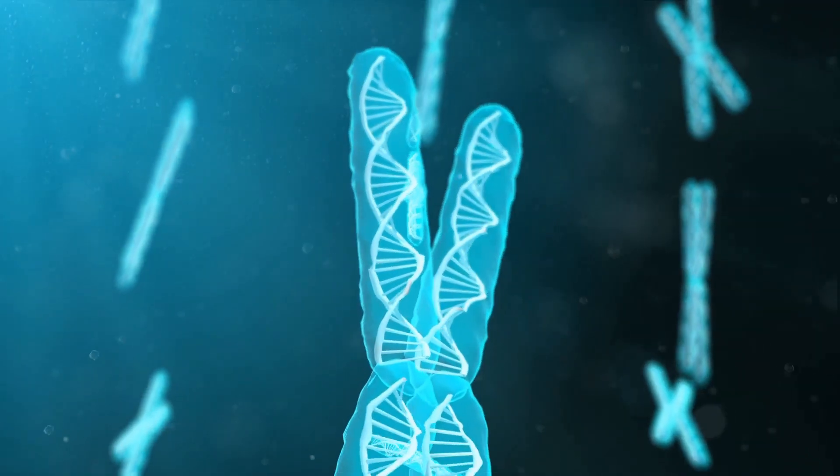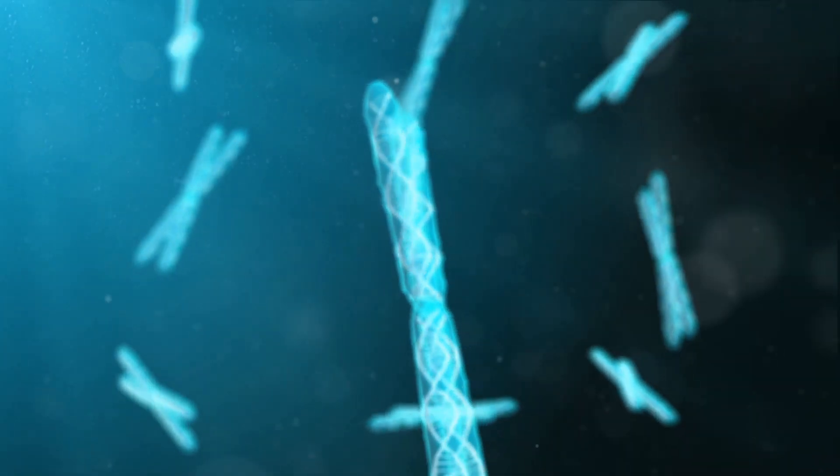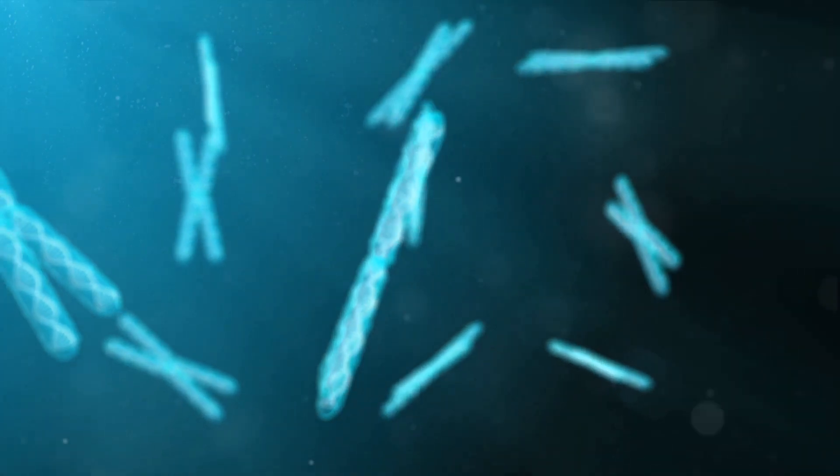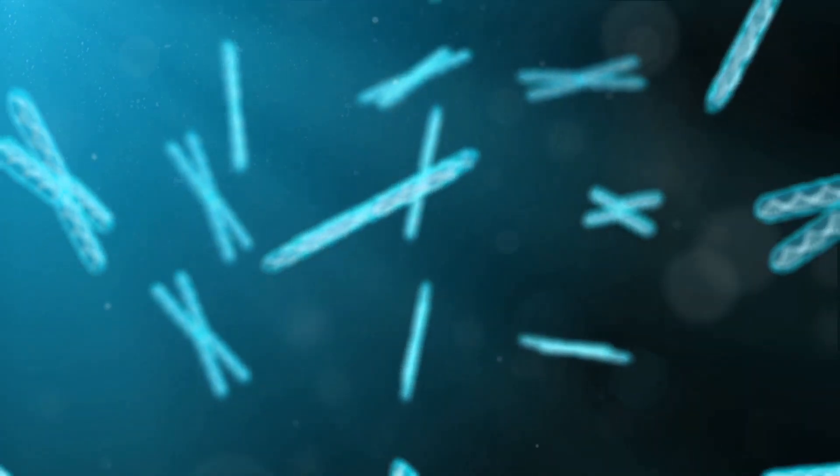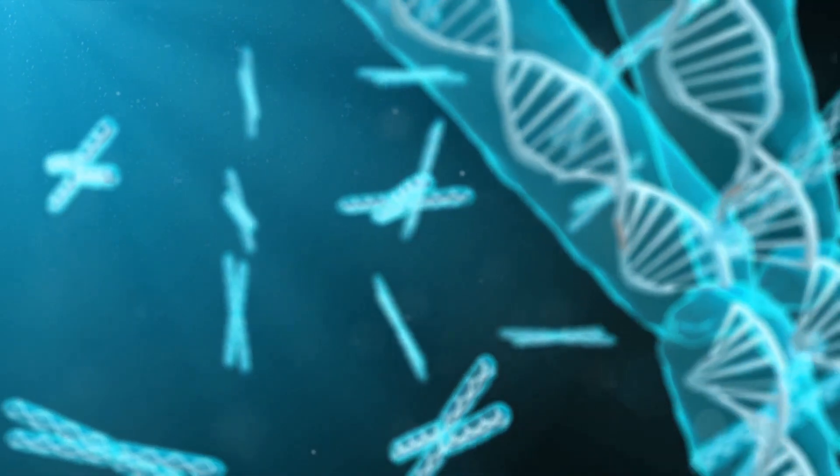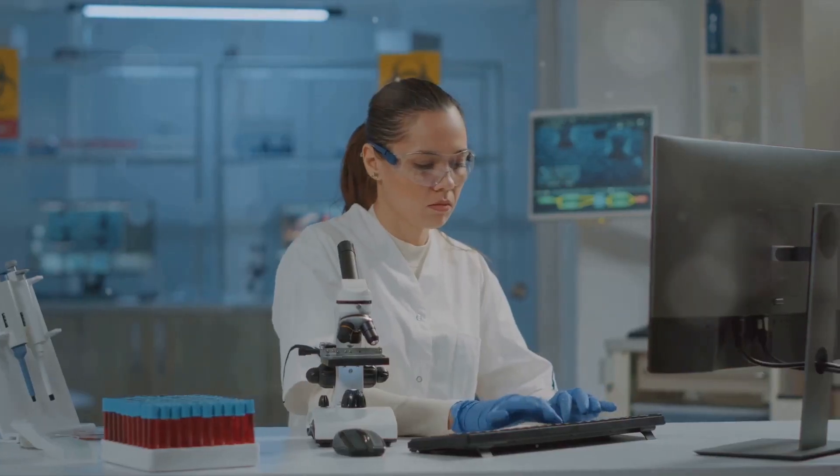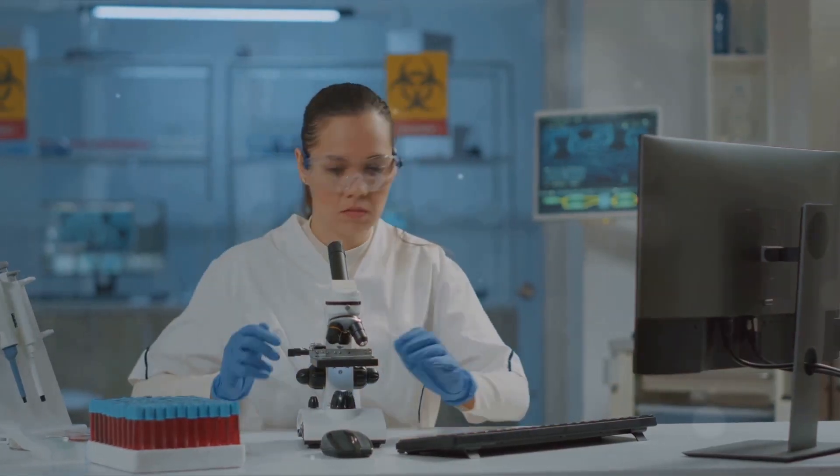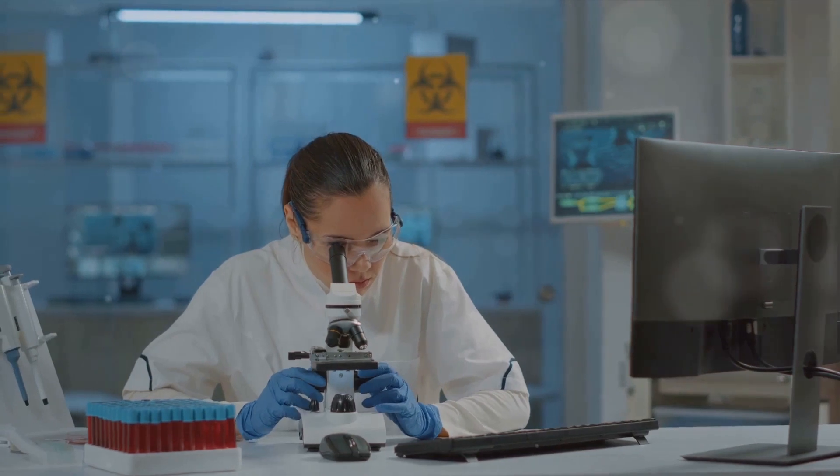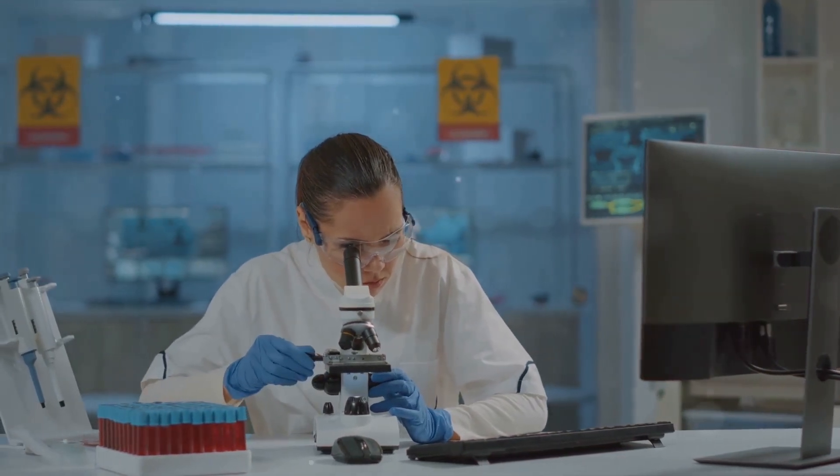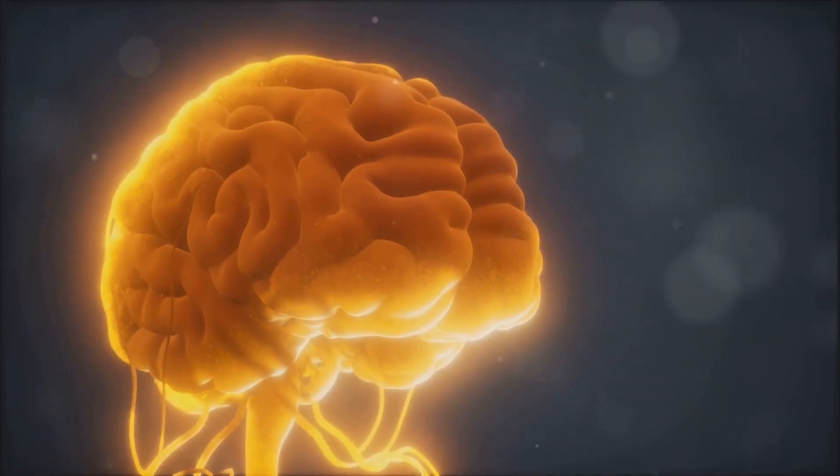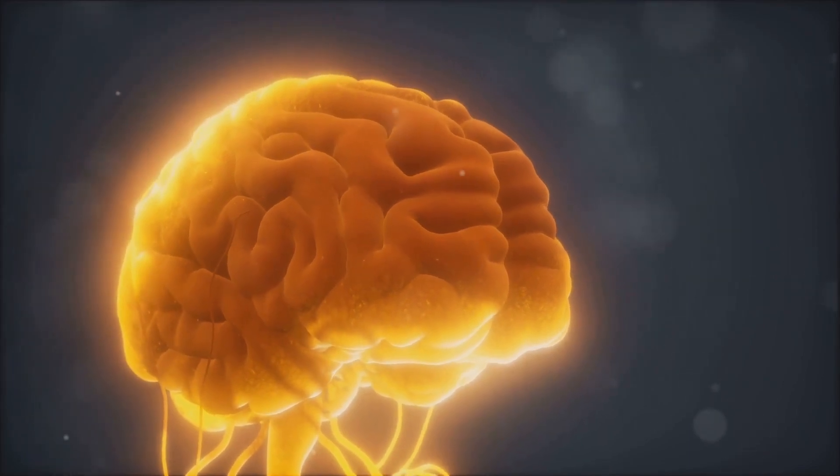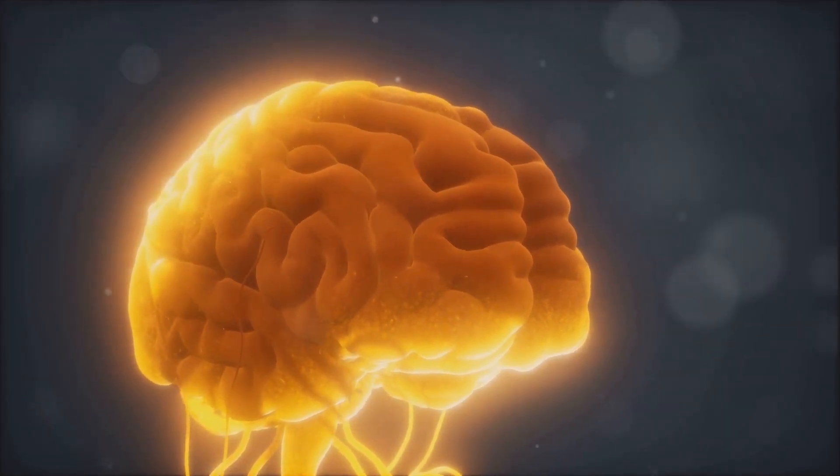So how did these researchers achieve this feat? They used techniques that analyzed DNA methylation patterns and 3D genome structure, previously applied in mice, now for the first time in human brains. This has allowed them to identify different cell types in the brain, each with its own unique role and function. Indeed, this marks a significant advancement in understanding brain cell diversity and function.